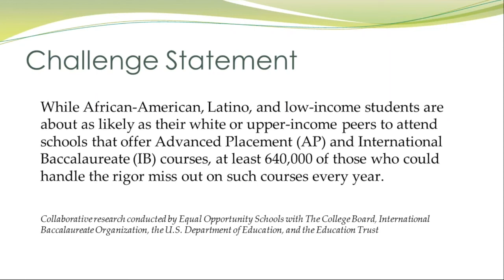My challenge statement is this: as we move forward, as our society is aging out and becoming so much more diverse, according to Equal Opportunity Schools in collaboration with College Board, International Baccalaureate Organization, U.S. Department of Education, and Education Trust — there are at least 640,000 students of color or poverty every year who have the skills and ability to be in our most advanced courses, but they miss out on that opportunity. The challenge is: can we look at our policies, intervention strategies, culture, and climate, and do a better job of engaging all of our students — rather than losing talent that costs society $35 billion a year?